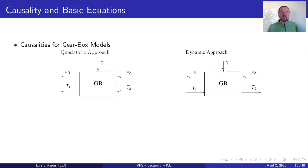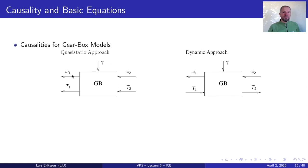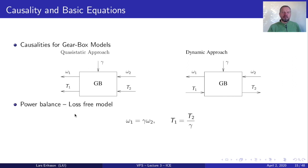Coming to the different modeling approaches for gearboxes, we have the quasi-static approach and the dynamic approach. In the quasi-static approach we come from the output of the driveline, asking for a certain rotational speed from the driving cycle along with a certain torque at the wheels. The gearbox gear ratio is used to transform the angular velocity to an engine angular velocity and the output torque to an engine torque. In the dynamic approach, torque is inputted from the engine and translated to an output torque using the gear ratio, and the wheel speed is transformed to engine speed. We will use mostly loss-free models initially, then add efficiency later.